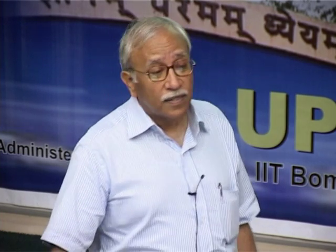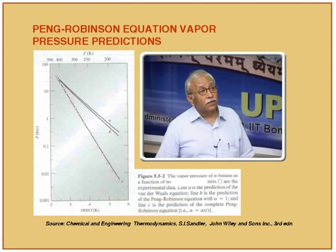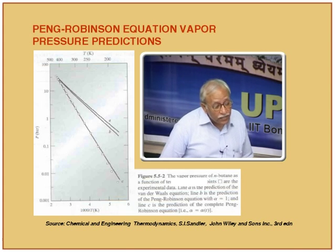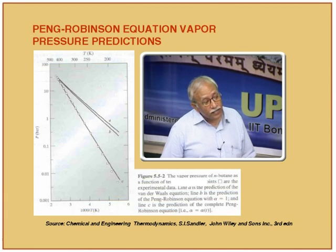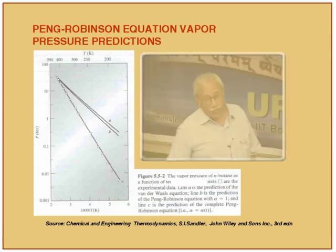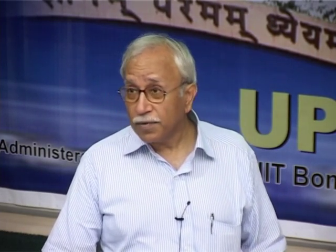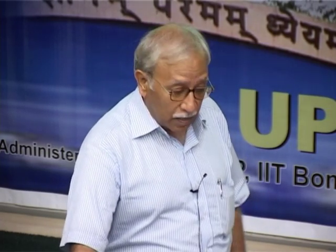Now, just to illustrate another point: how important is the dependence of intermolecular forces on temperature and eccentricity — something we have been discussing since the Soave-Redlich-Kwong equation. The open circles or squares represent the experimental data. This is for normal butane, with a 1/T scale on the x-axis and pressure on the y-axis — essentially a vapour pressure versus temperature relationship.